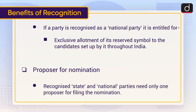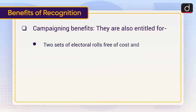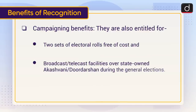Recognized state and national parties need only one proposer for filing a nomination. Regarding campaigning benefits, they are also entitled to two sets of electoral rolls free of cost and broadcast or telecast facilities over state-owned Akashvani or Doordarshan during general elections.